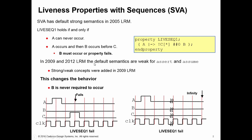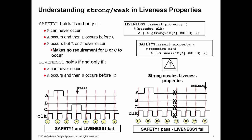In the 2009 LRM, the concepts and the keywords weak and strong were introduced. The decision was made to change the default. So if you type this exact same code and compile with a 2009 or 2012 compiler, this is a weak property — it changes behavior from the 2005 LRM. With a property like this, it's as if you typed weak in front of it.